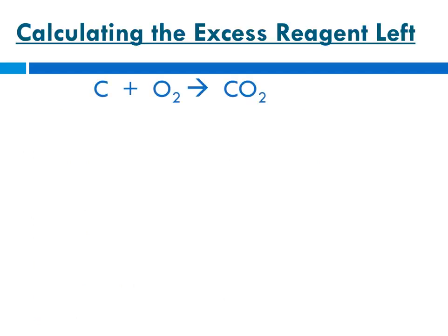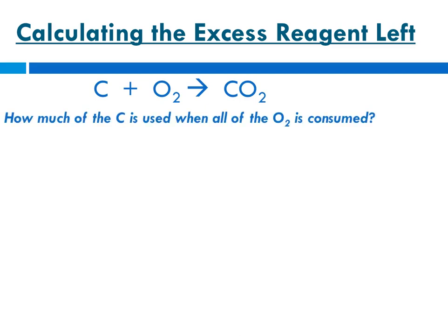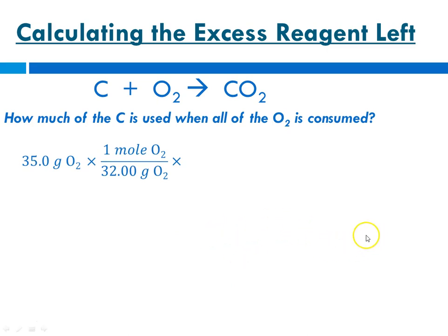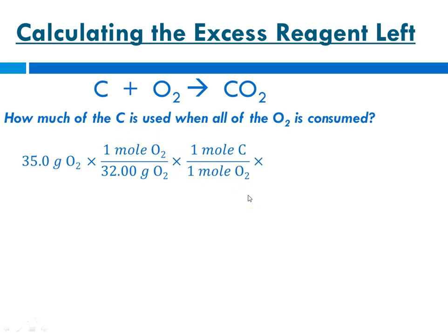Let's calculate it. Going back to our same equation: how much carbon is used when all of the oxygen is consumed? We know all 35 grams of oxygen will be used, so we go from grams of oxygen to moles of oxygen, then from moles of oxygen to moles of carbon. The mole ratio is between carbon and oxygen; carbon needs to be in the numerator and moles of oxygen in the denominator. Then we multiply by carbon's molar mass — 12.01 grams per mole. So 35 ÷ 32 × 12.01 = 13.1 grams of carbon used.